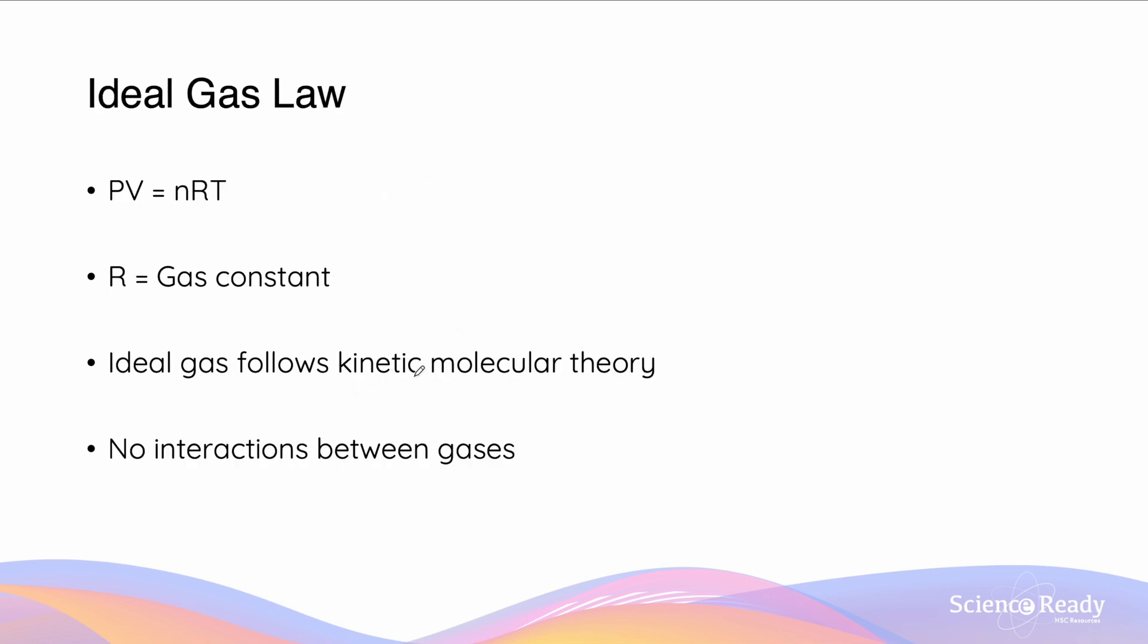So an ideal gas is one which we assume follows the kinetic molecular theory of having elastic and non-interactive collisions. However we know the idea that there are going to be no interactions between gases is not actually true in reality, because we know that although they may be minimal, there will still be some intermolecular interactions between the gas molecules.